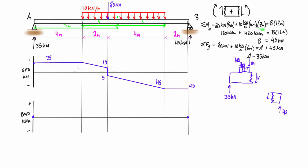Looking at the first area, it's a rectangle — base times height is 35 kN times 4 meters, giving an area of 140 kNm. This brings us up to a change in magnitude of 140 kNm with a linear change, in the positive direction as we go from left to right.